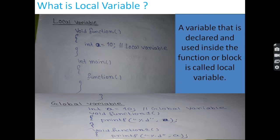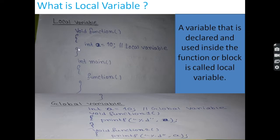We will know what is a local variable in C. A local variable is always declared within the function or block. Here in this code, void function with int a equal to 10 — a equal to 10 is declared within the function or block. A block is a sequence of statements grouped together inside a pair of curly braces. So int a equal to 10 is a local variable.